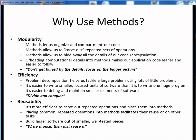So why do we want to use methods in software anyway? It really boils down to these three things: modularity, efficiency, and reusability. In terms of modularity, methods help us better structure and compartmentalize our code. They allow us to carve out or isolate repeated operations and to hide away the underlying details of our algorithms, or what we call encapsulation. By breaking up our programs into smaller chunks, it becomes easier to create and understand our software. Don't get buried by the details. Focus on the bigger picture.